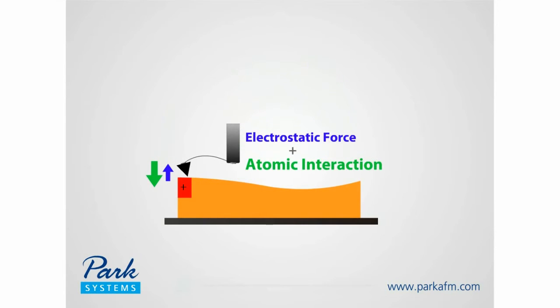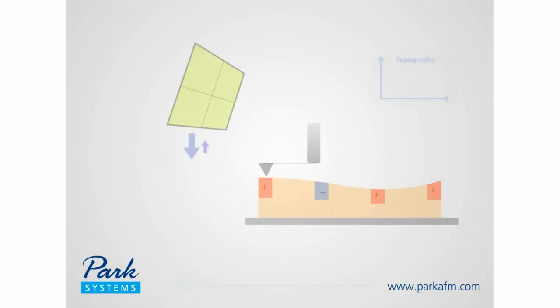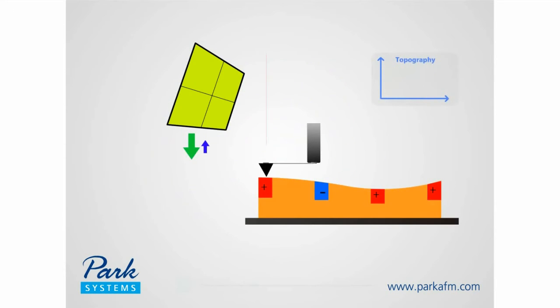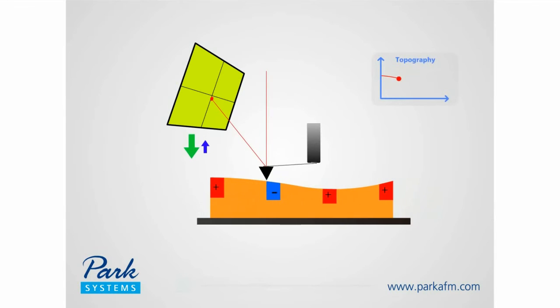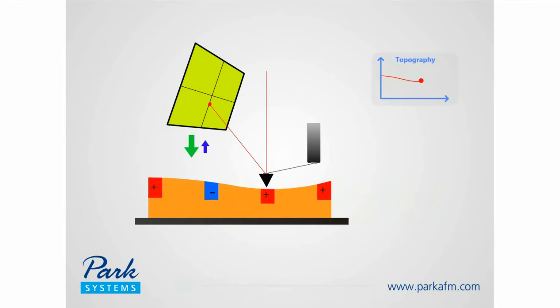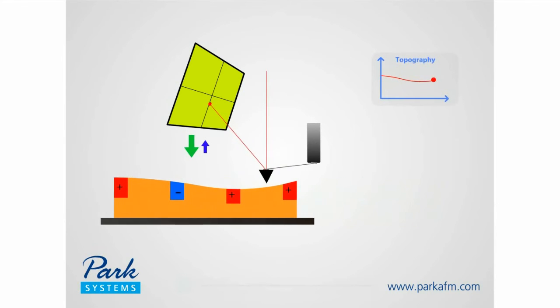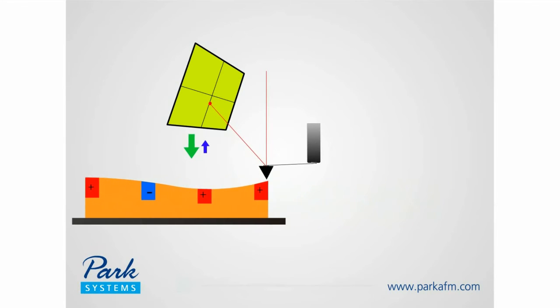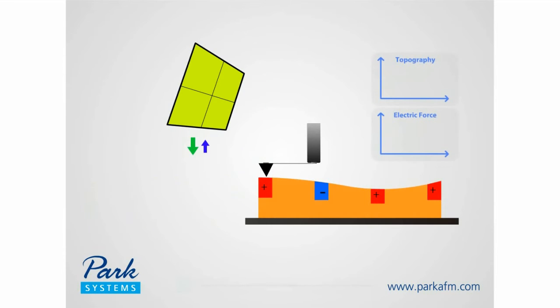An EFM image is the result of two separate scans. One scan probes the topography, while in the other the cantilever is raised away from the surface to the region where long-range electrostatic force begins to dominate.